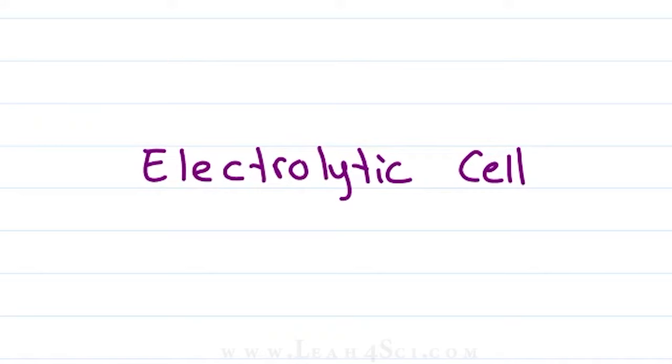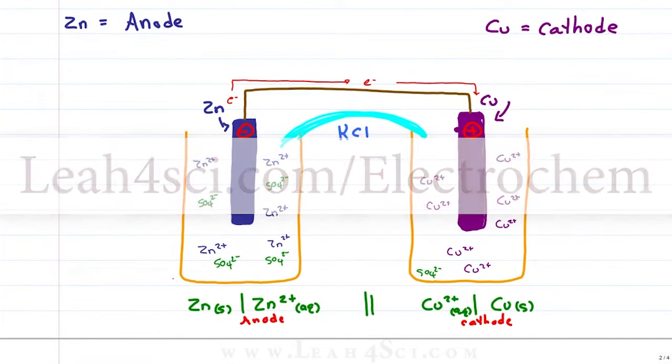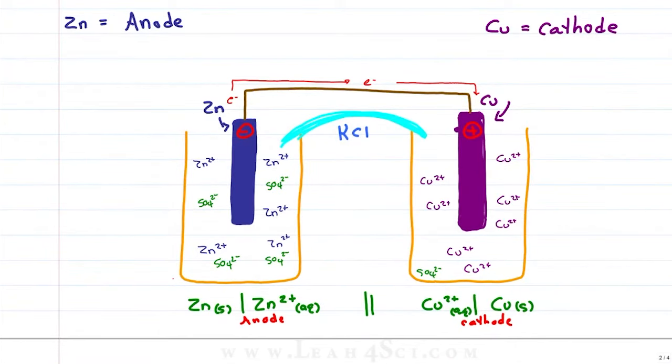Let's review the non-spontaneous electrochemical cell. In the last video, we looked at the galvanic or voltaic cell which is a spontaneous reaction. But what if we want to drive a non-spontaneous reaction?